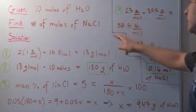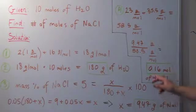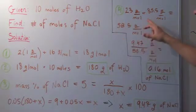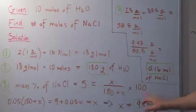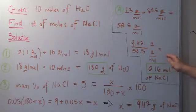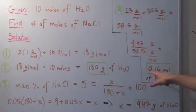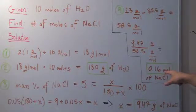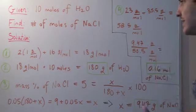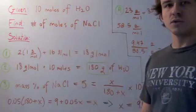This is the molecular weight of sodium chloride. To find the number of moles, we divide our amount by our molecular weight. The grams cancel and moles go on top. So 9.47 divided by 58.5 gives us 0.16 moles of sodium chloride that we need to add to our solution to create a 5% by mass solution of sodium chloride.